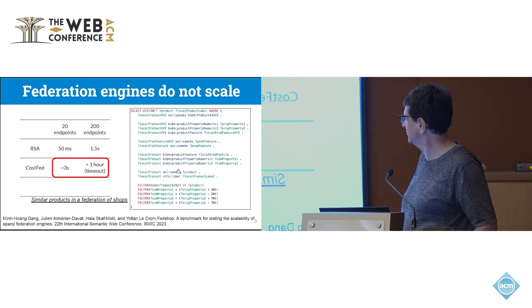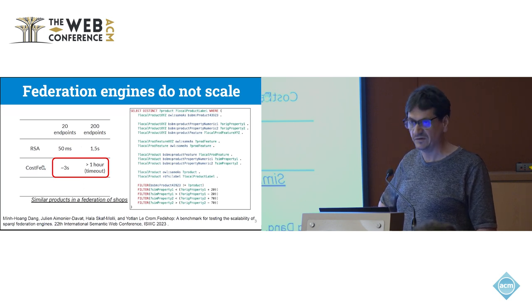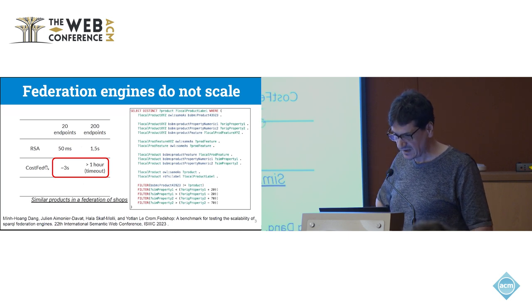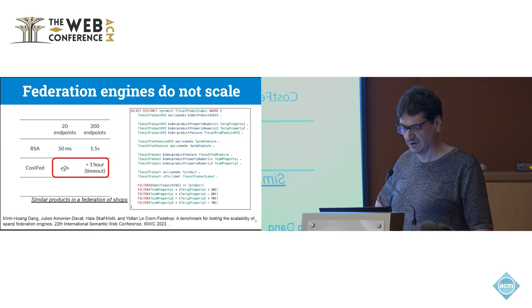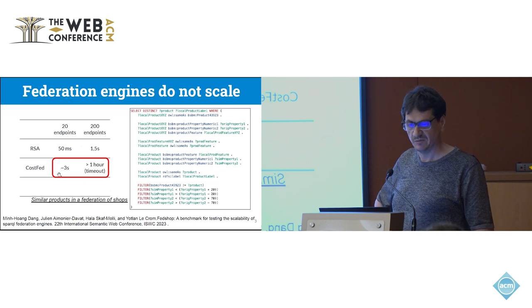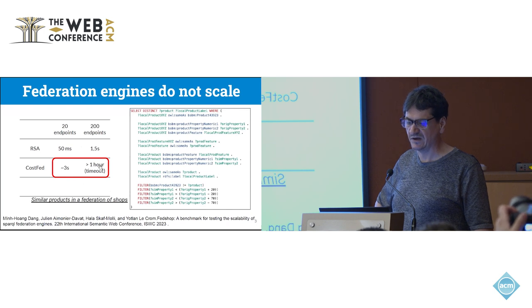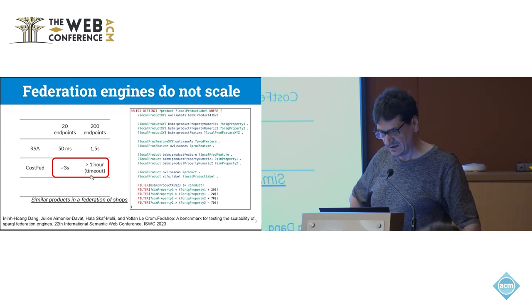Here you see the Query Q5 of the last federated benchmark, and you see Cosfed, which is a very good federated engine. When you have only 20 endpoints, the Query Q5 takes three seconds. But if you go to 200 endpoints, then it timeouts after one hour. I think it takes more than one day.